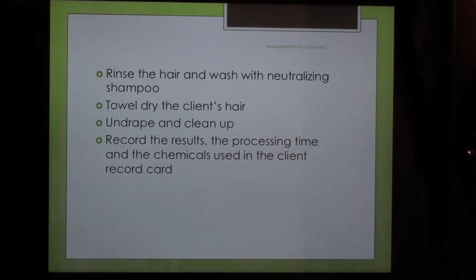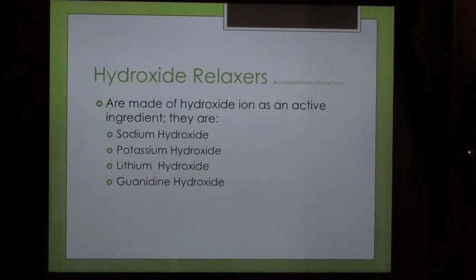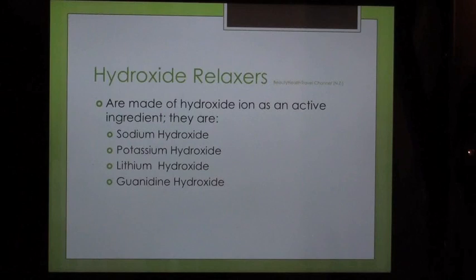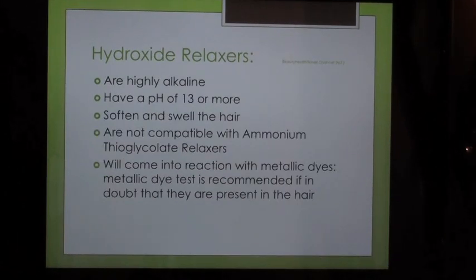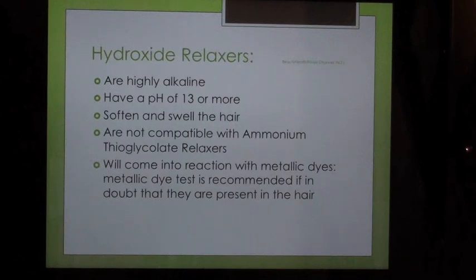Hydroxide relaxers use hydroxide ions as the active ingredient. Types include sodium hydroxide, potassium hydroxide, lithium hydroxide, and guanidine hydroxide. Hydroxide relaxers are highly alkaline, have a pH of 13 or more, soften and swell the hair, and are not compatible with ammonium thioglycolate relaxers.